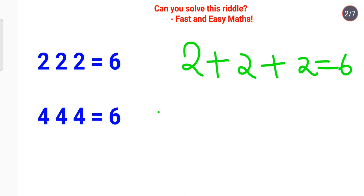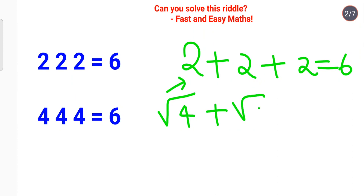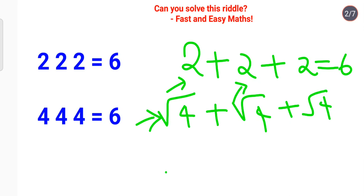Now what happens when it comes to 4? We can do a square root — square root of 4 gives you 2. Similarly, square root of 4 again gives 2, and then add another square root of 4. So that is basically 2 plus 2 plus 2, which equals 6.